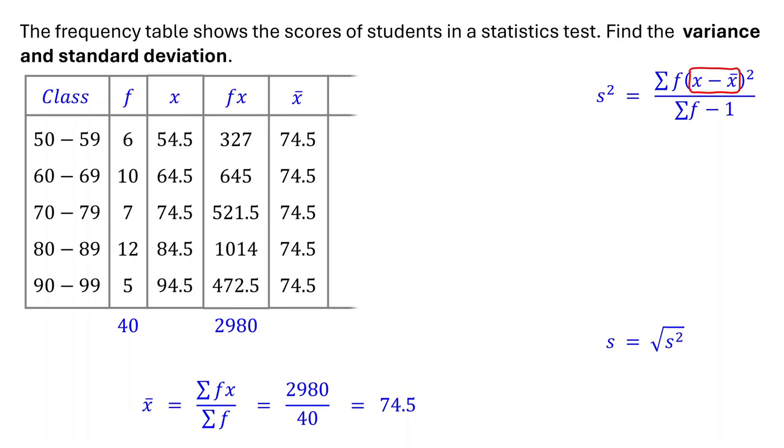Next, subtract the mean from each midpoint. For the first class, 54.5 minus 74.5 is negative 20. For the second class, 64.5 minus 74.5 is negative 10. Do the same for the remaining classes. Next, square each of the differences you obtained. Negative 20 squared is 400. Negative 10 squared is 100. Repeat for the other classes.